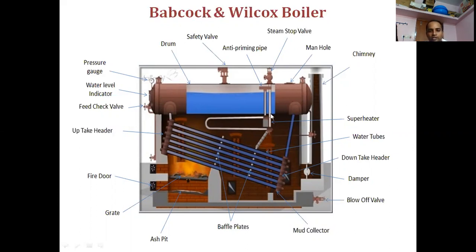The main parts of this boiler are the boiler drum and the downtake header. You can see the downtake header has water tubes which are inclined at some angle, in the range of 15 degrees to 20 degrees, and the uptake header. The furnace and the entire structure of the boiler shell are placed upon brickwork, which you can see here.